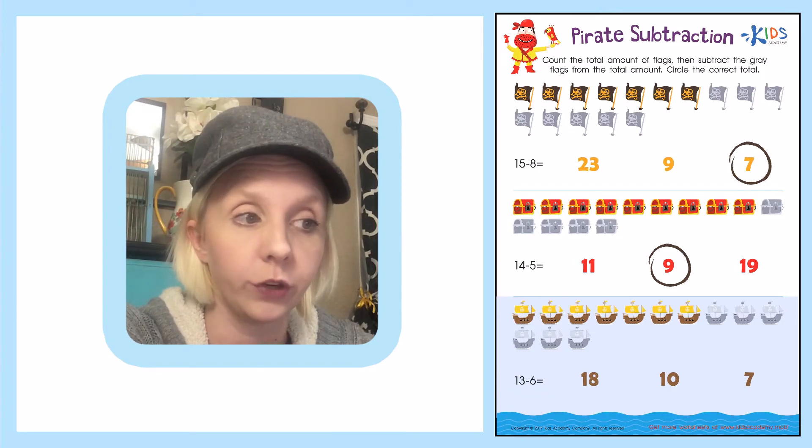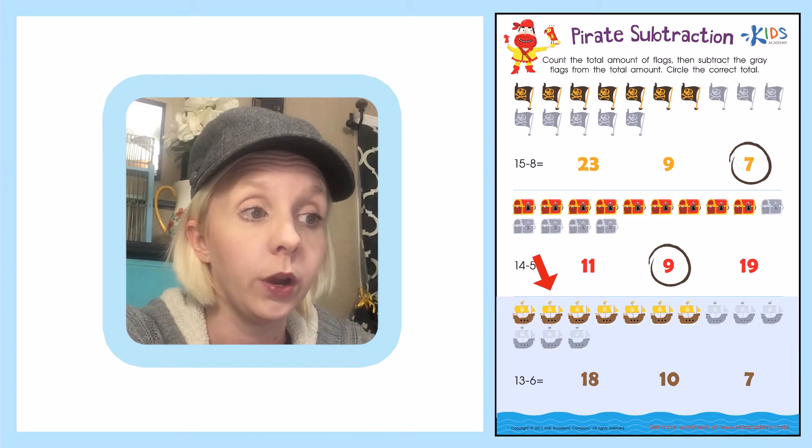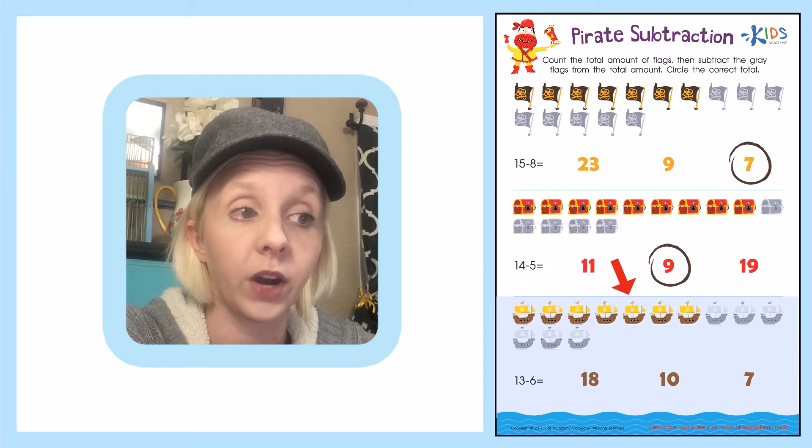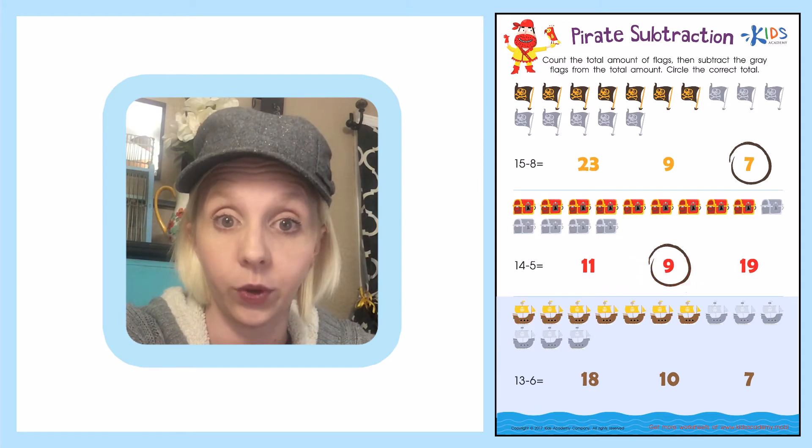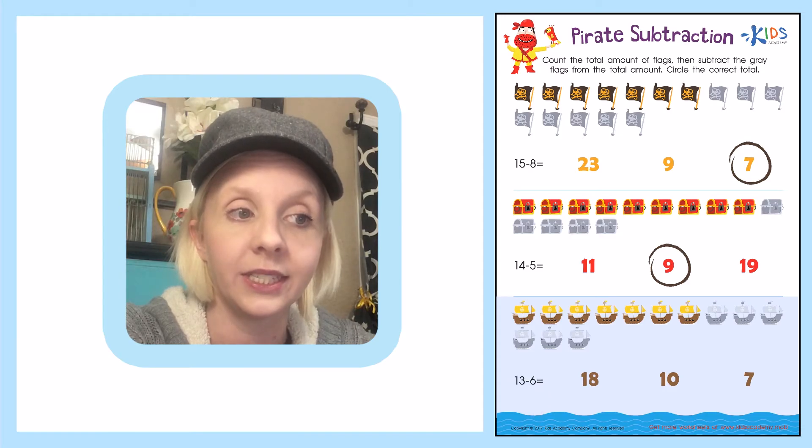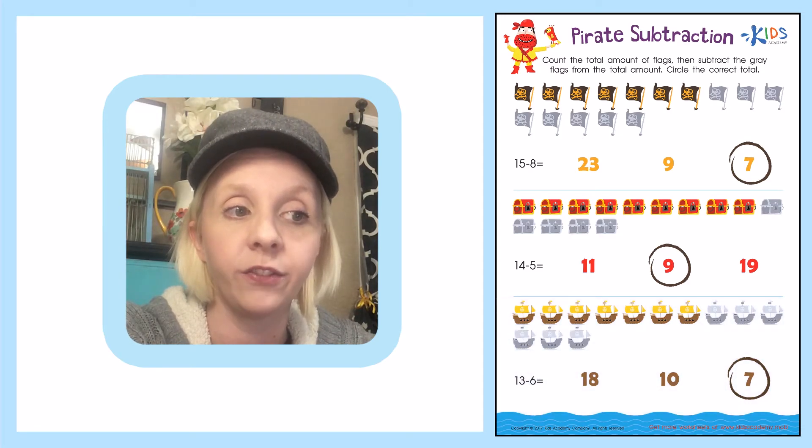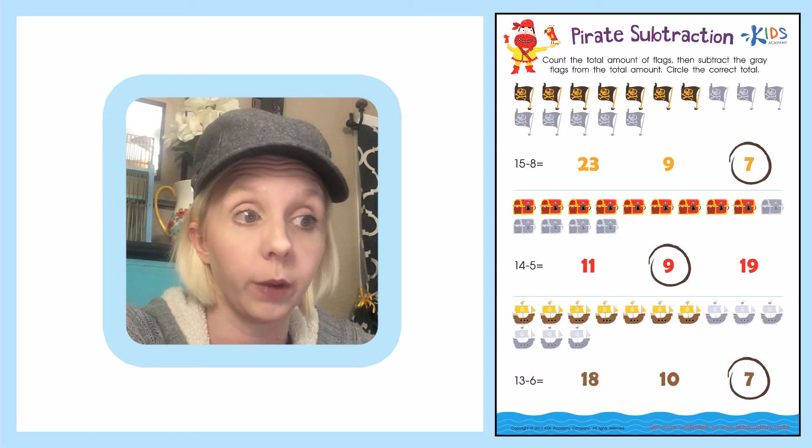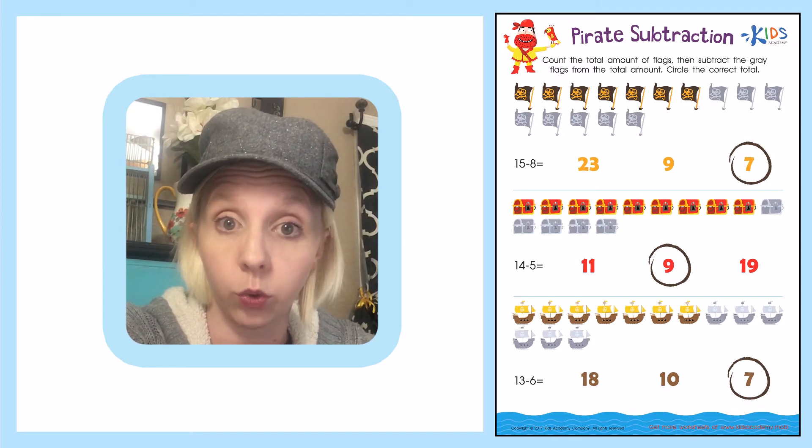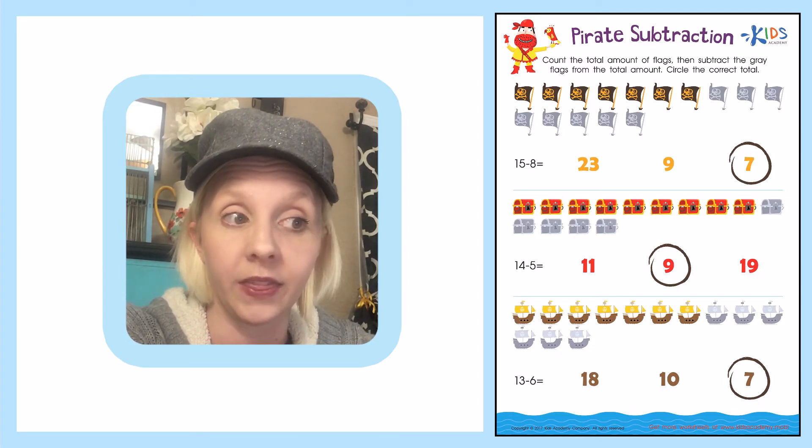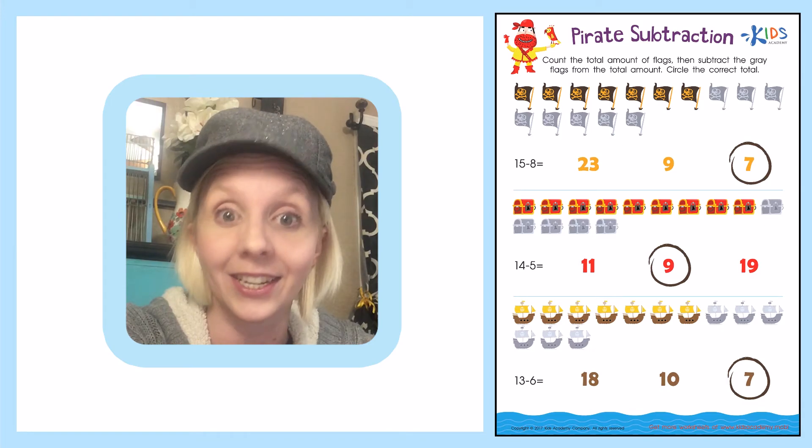We're going to count how many is left over. Count with me. 1, 2, 3, 4, 5, 6, 7. So 13 minus 6 equals 7. That's a great way to figure out subtraction problems: draw up the total, cross out or make another color the one that we're subtracting, and then count up the total at the end.